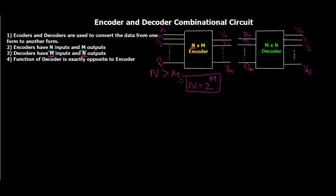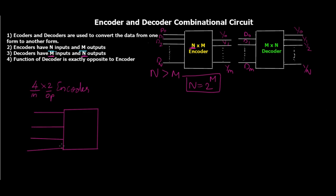Let's take the case of a 4x2 encoder. 4 is the number of input lines — D0, D1, D2, D3 — and 2 is the number of output lines: Y0 and Y1. Now, at any one time only one of the input data lines is going to be high — either D0, D1, D2, or D3 — but all of them are not going to be high at the same time.